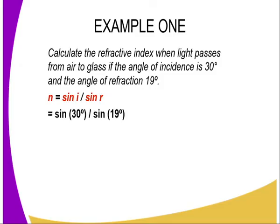Remember, n equals sine i over sine r. The angle of incidence is 30 and the angle of refraction is 19. So what we need to get is the sine of 30 degrees divided by the sine of 19 degrees. Therefore, we have 0.5 divided by 0.326 and this gives us a refractive index of 1.53.